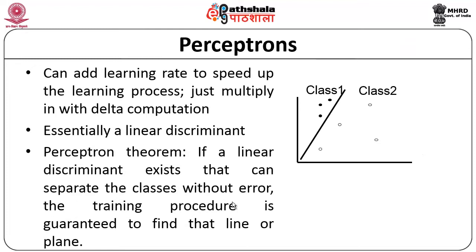Perceptrons are normally considered to be linear classifiers — they differentiate classes very clearly and distinctly, and you can define a straight line as shown in this diagram. Assume a scatter plot of various data points: some belong to class 2 and some to class 1. Using a perceptron model, you can end up with a linear line that clearly demarcates class 1 from class 2 data. So it is considered a linear discriminant, and whenever you have a classification problem that is linear in nature, neural networks will be the best solution.